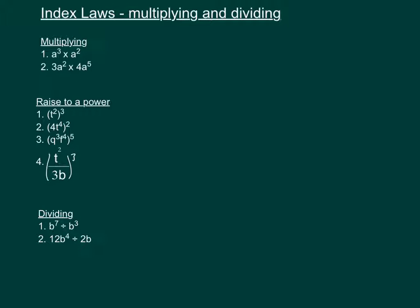We've got a to the power of 3 times a to the power of 2. So that means a times a times a — that's a to the power of 3 — and then we're multiplying that by a times a, which is a squared. So that leaves us with 5 a's, which is a to the power of 5.